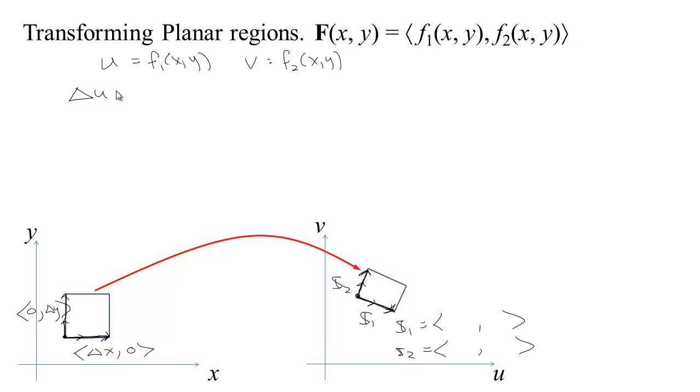And so remember, if u is some function of x and y and v is some other function of x and y, then the differential du, or the change in u, is going to be approximately equal to the rate of change of f1 in the x direction. So the partial with respect to x times the change in x plus the partial of f1 with respect to y times the change in y. So by the same token, change in v is going to be roughly equal to the slope of f2 with respect to x times the change in x plus the slope of f2 with respect to y times the change in y. So this is just our usual differential calculation.